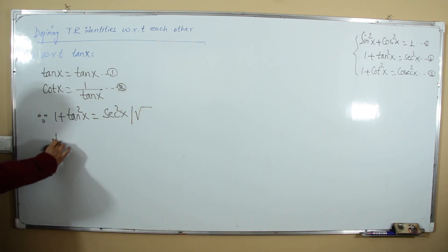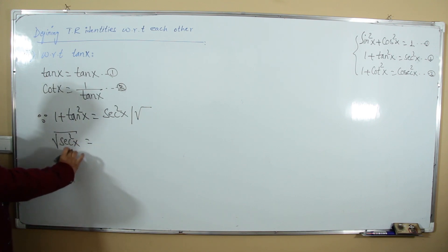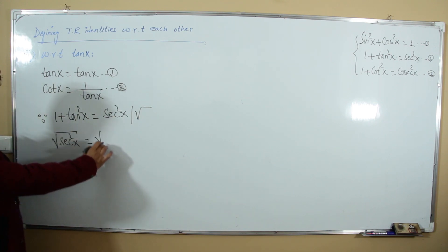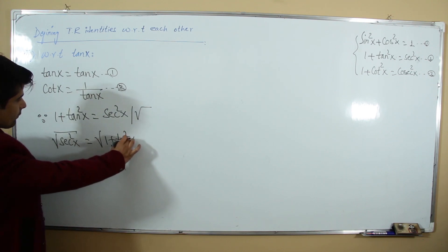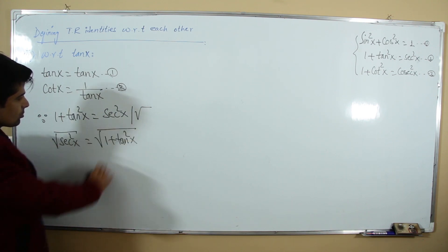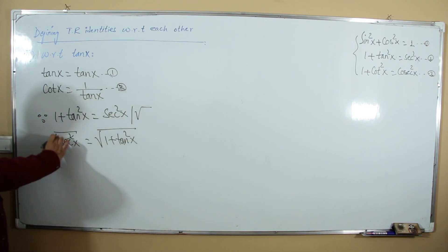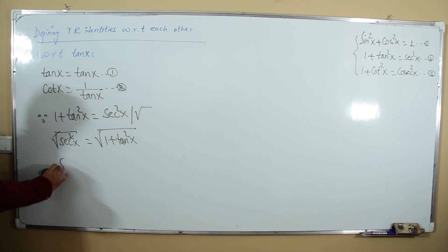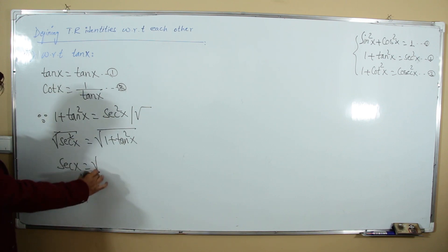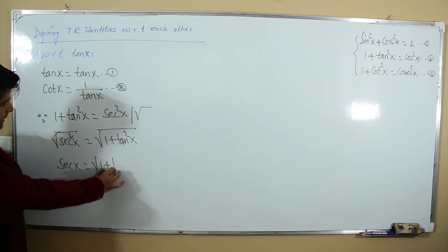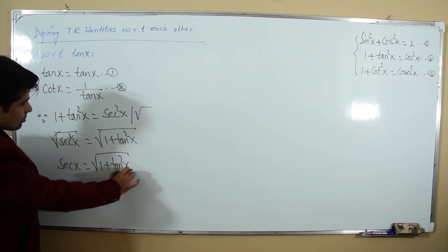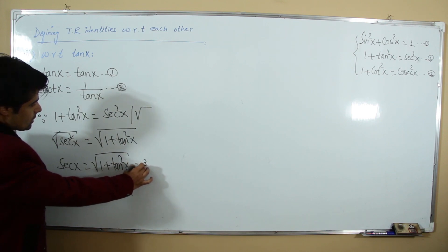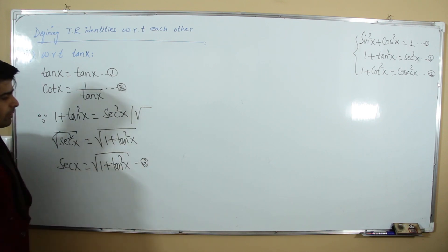Taking the square root of both sides of 1 + tan²x = sec²x gives: sec x = √(1 + tan²x). This is our third relation.